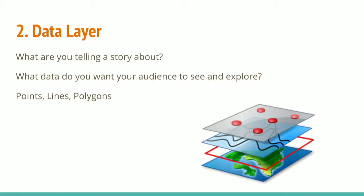Data layers are the second component of a map — what are you telling your story about? What kind of data do you want your audience to see or interact with? Traditionally you think of them in terms of points, lines, and polygons. Points are locations — if you type Codecraft on Google Maps, you'll get a point marker. A line is like a route. A polygon is something like a county or building outline. Those are different kinds and you have to interact with them a little differently.